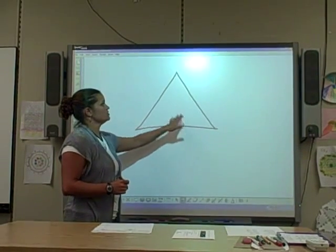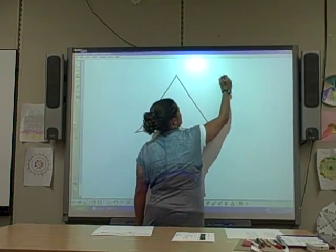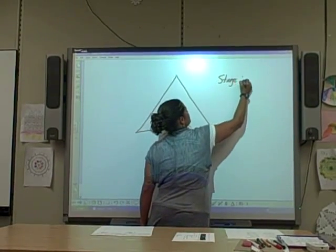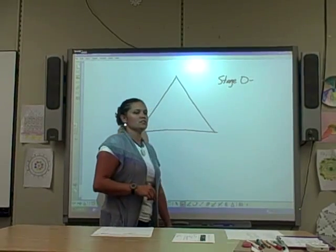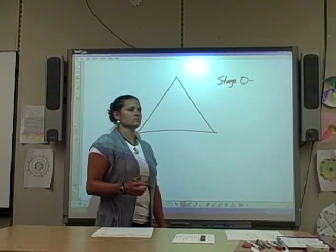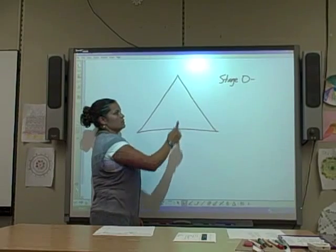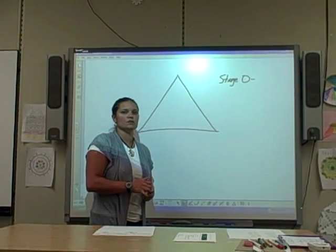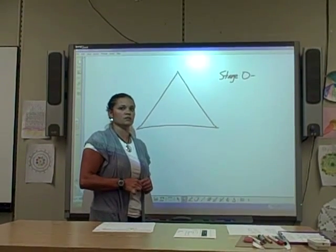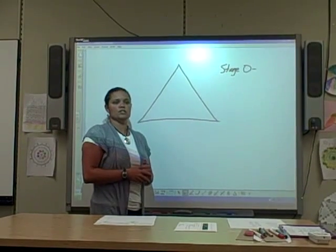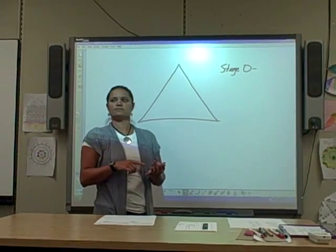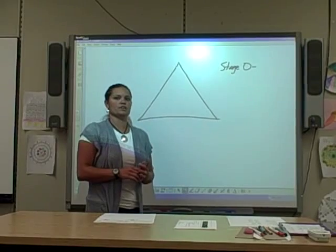This would be what's called a stage zero fractal. For my stage zero, I want to use the number 81, which is going to be the measurement of each of my sides. I'm choosing 81 because it's easily divisible by three. Whatever number you use, you need to keep in mind that it's going to be divided by three every time.